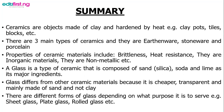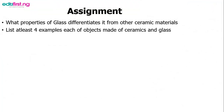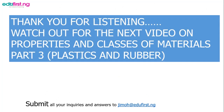In this video we've been able to talk about ceramics, the types of ceramics, the properties of ceramics, glass, the forms of glass, and how glass differs from other ceramic materials. Your assignment is to write out the properties of glass that differentiate it from other ceramic materials, and list at least four examples each of objects made of ceramics and glass. Thank you for listening — watch out for the next video on properties and classes of materials, part three, which will be about plastics and rubber.